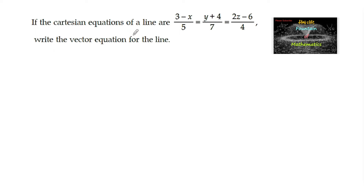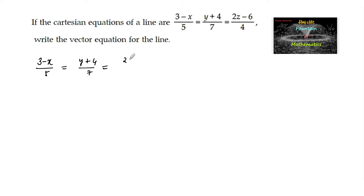If the Cartesian equations of a line are (3 minus x) upon 5 equals (y plus 4) upon 7 equals (2 times z minus 6) upon 4, then write the vector equation for the same line.